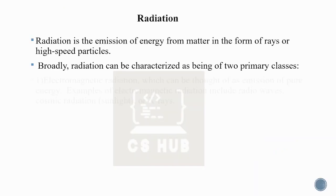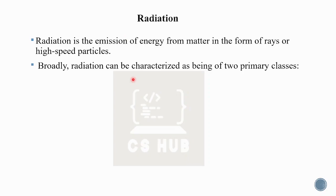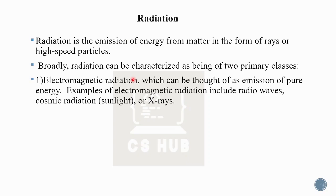Radiation is the emission of energy from matter in the form of rays or high-speed particles. Radiation can be generally classified into two primary classes. The first one is Electromagnetic Radiation, which is the emission of pure energy.